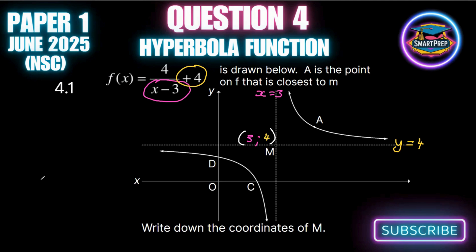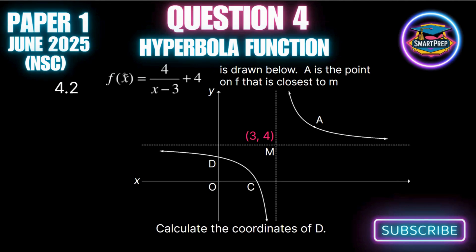The next question asks for the coordinates of D. D is the y-intercept of the hyperbola, so to get the y-intercept we make x equals 0. We get 4 over 0 minus 3 plus 4, which equals 4 minus 4 over 3. We pop that in our calculator and we get 8 over 3.